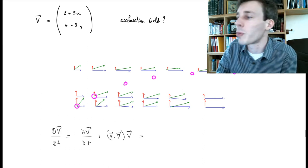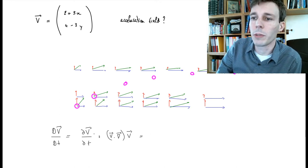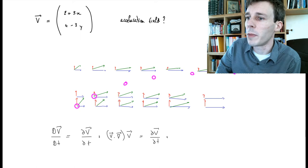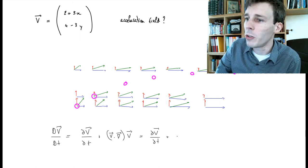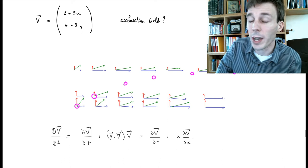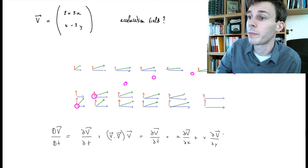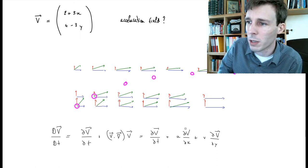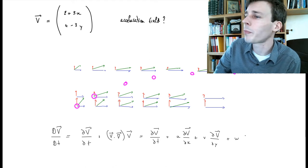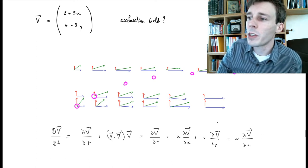This convective term is a shortcut. Written out more explicitly, it is: partial v over partial t, plus u times the change of the velocity field with respect to x, plus v times the change with respect to y of the velocity field, plus w times the change over z of the velocity vector.